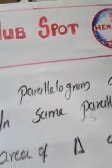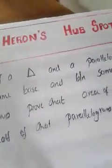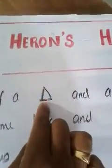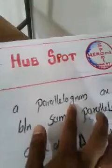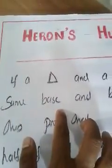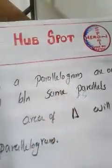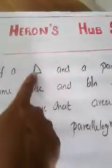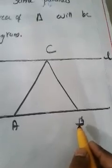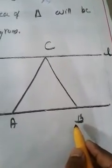This time, instead of multiple parallelograms, we are considering a single triangle and a single parallelogram. The specialty is that they share the same base and are between the same parallels. Under this condition, the area of the triangle will be half of the area of the parallelogram.